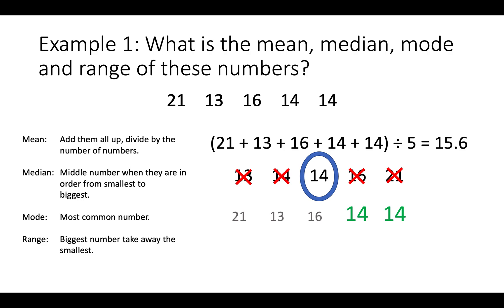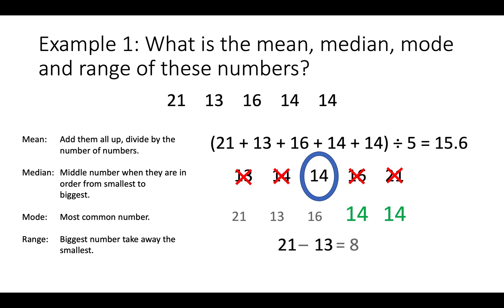Finally, I want to find the range. I take the biggest and the smallest number. 21 is the biggest number and 13 is the smallest number. I subtract them and I get 8.